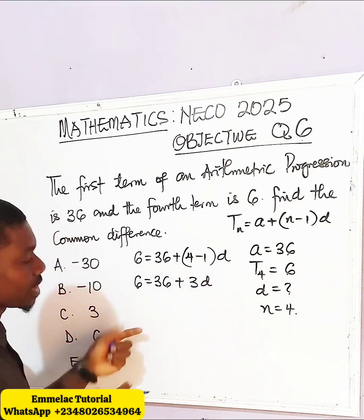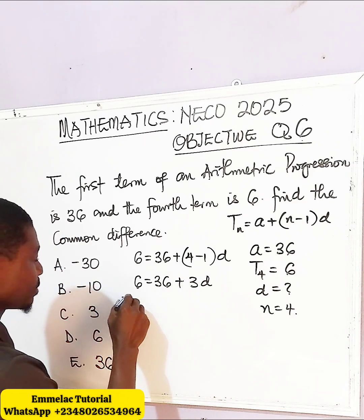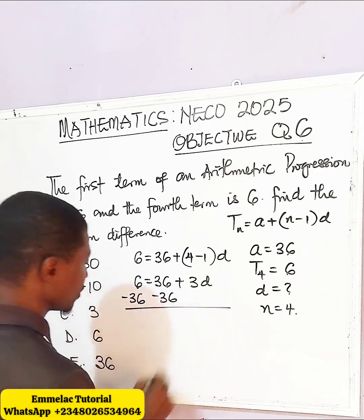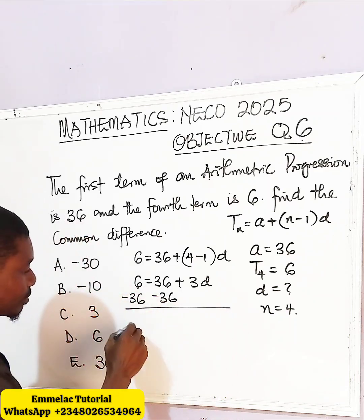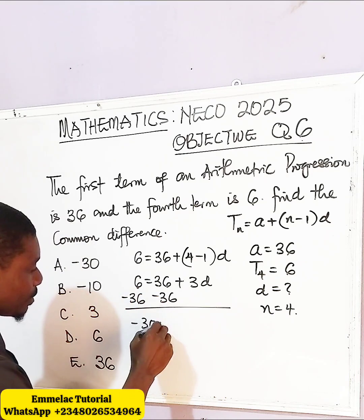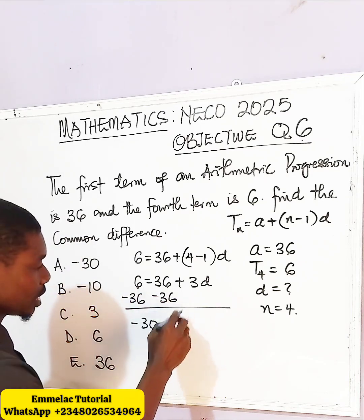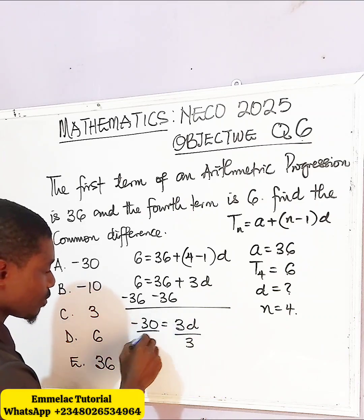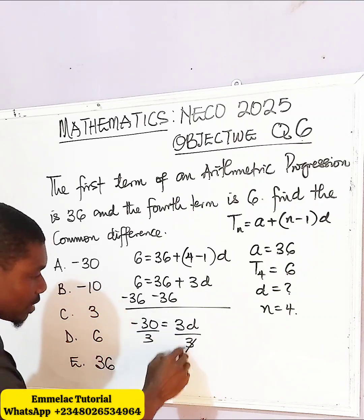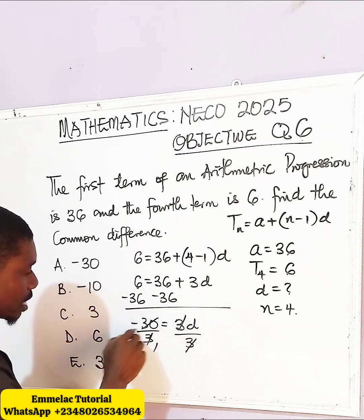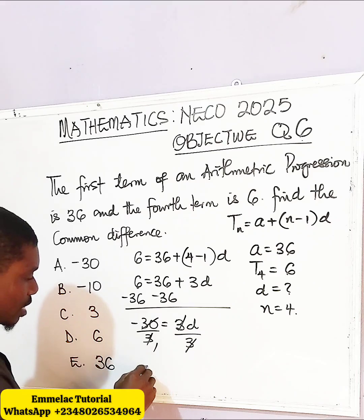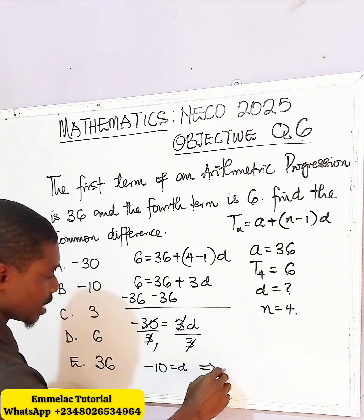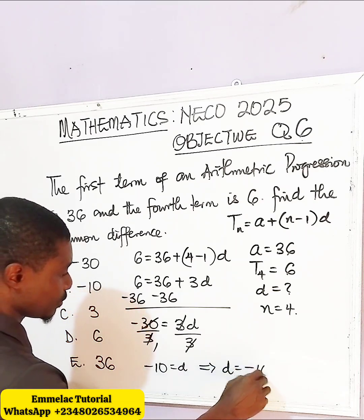Let us subtract 36 from both sides. This minus 36 is minus 36. We end up having minus 30 equals 3D. Dividing both sides by 3, negative 10 equals D, which also implies that D equals negative 10.